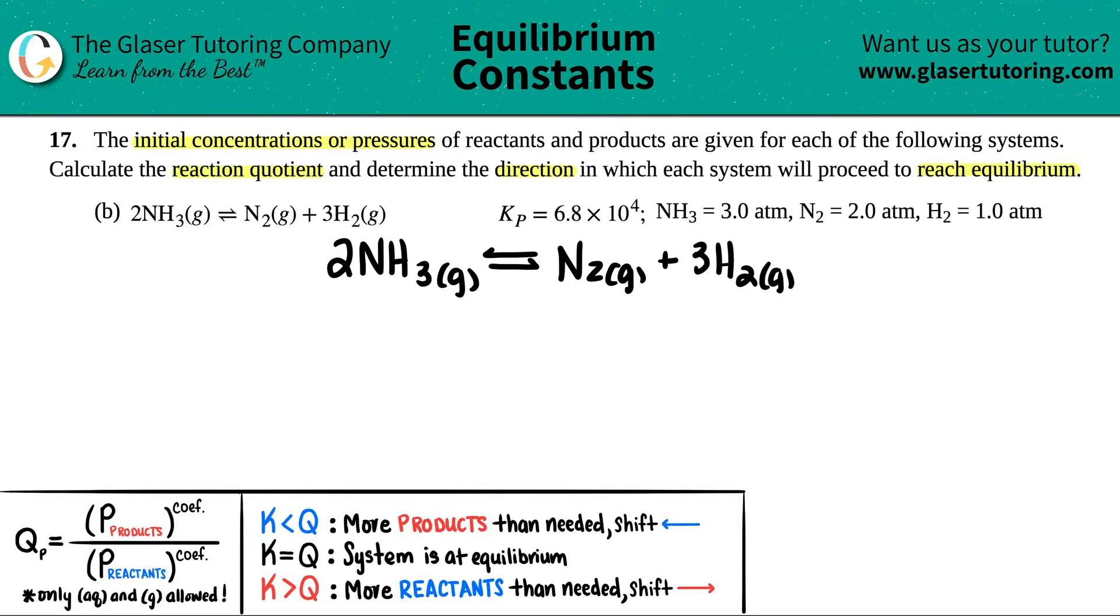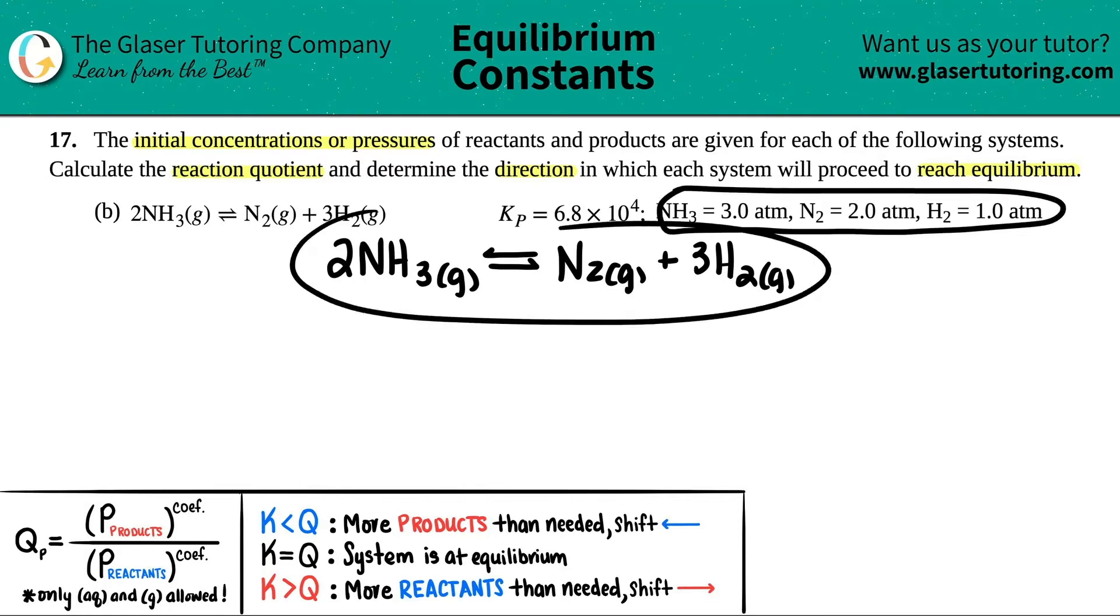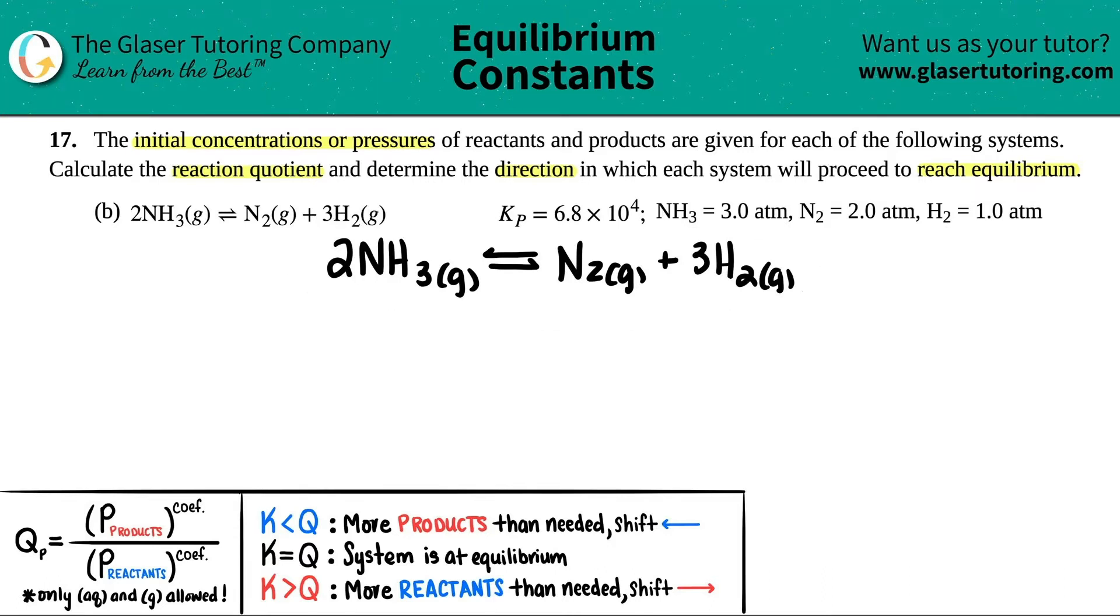The next thing I do is just put the numbers that they give me. For example, NH₃ they told us we had 3 atm, so here's my NH₃, I'm going to say that I have 3.0 atm. N₂ was 2 atm, so here's N₂, 2.0 atm. And then H₂ was 1 atm. That's how much I have for each of them.